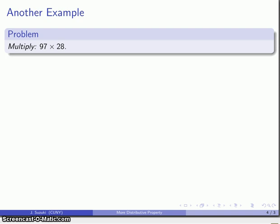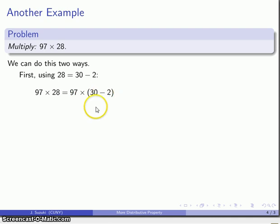Here's another example. Let's take the product 97 times 28. And in this case it might be worth noting that both of these are pretty close to an easy number to work with. So I might do this as 28 is 30 minus 2. So 97 times 28 is 97 times 30 minus 2, and that expands.